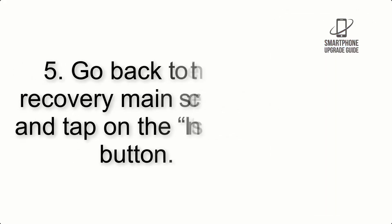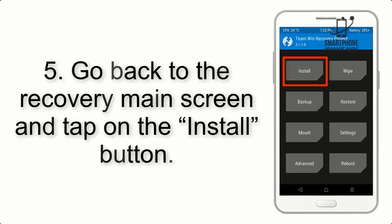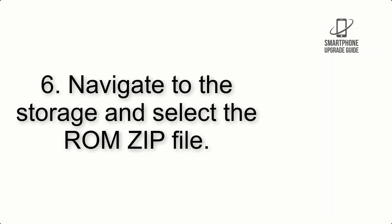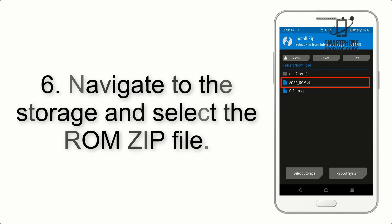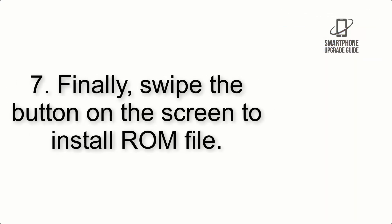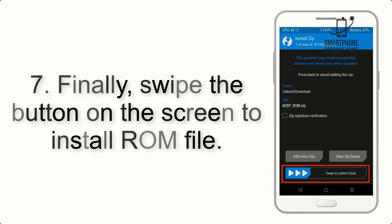Step 4: Swipe the button to wipe the device. Step 5: Go back to the recovery main screen and tap on the Install button. Step 6: Navigate to the storage and select the ROM zip file.